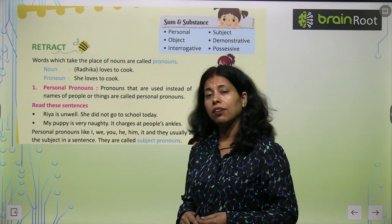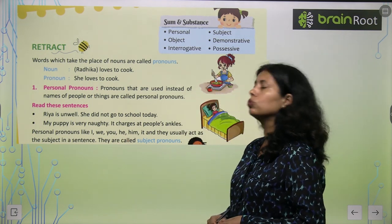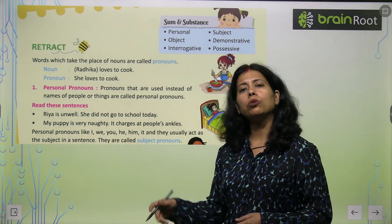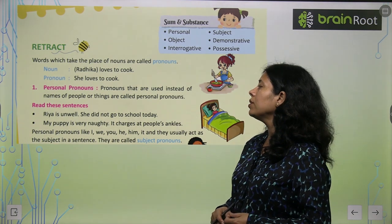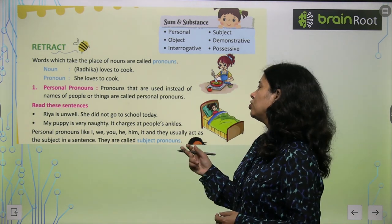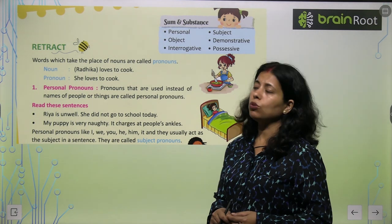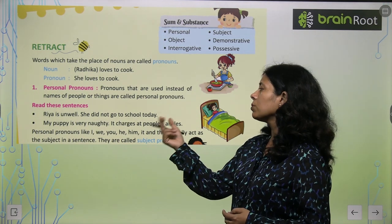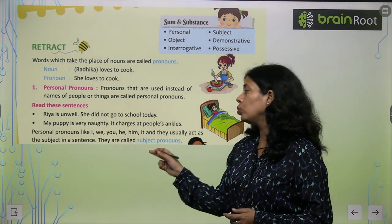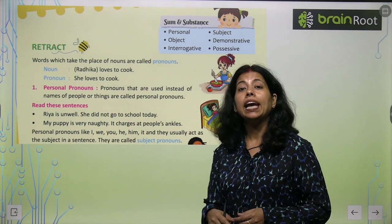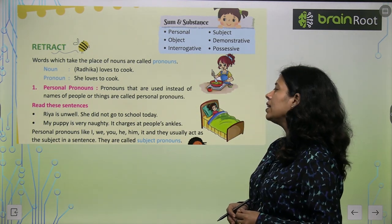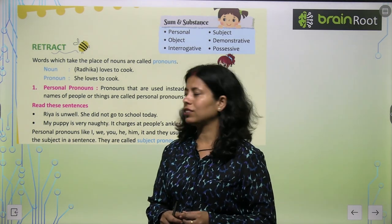Riya is unwell. She did not go to school today. So after saying Riya, we say She. My puppy is very naughty. It charges at the people's ankles. So after saying puppy, we use it. Personal pronouns like I, we, you, he, him, it usually act as a subject in a sentence.